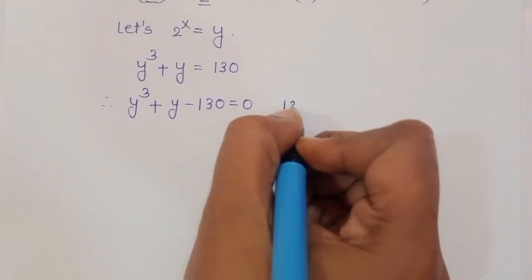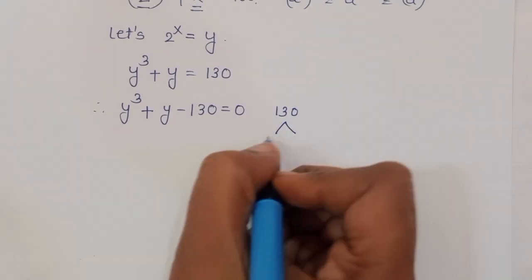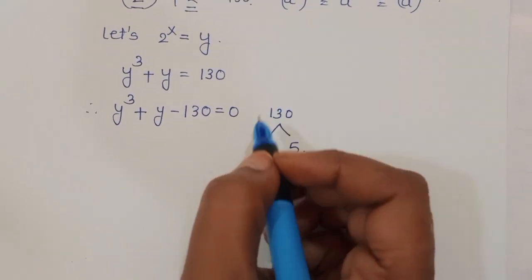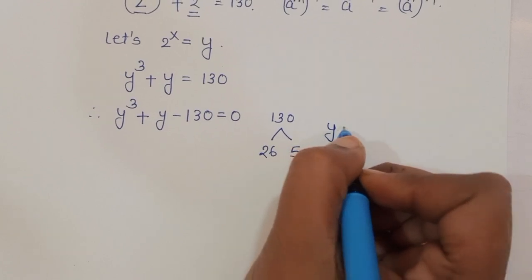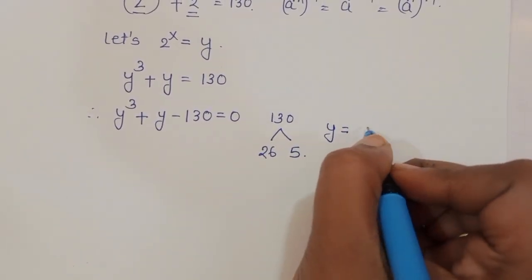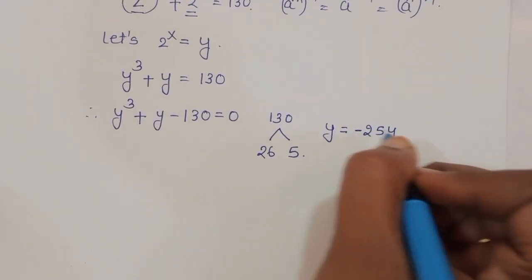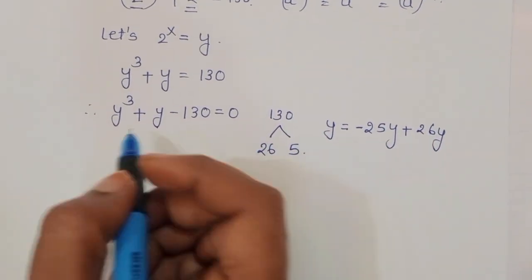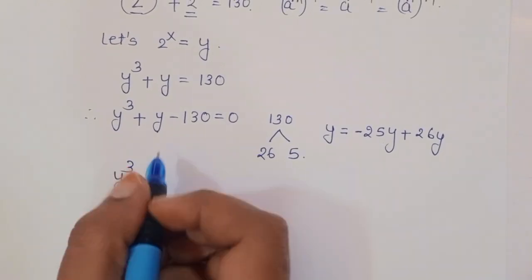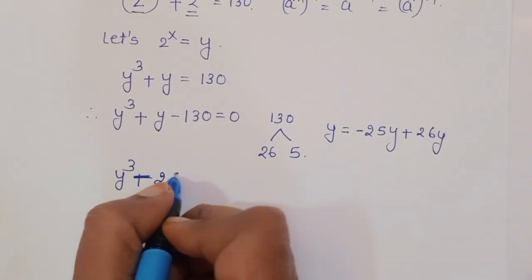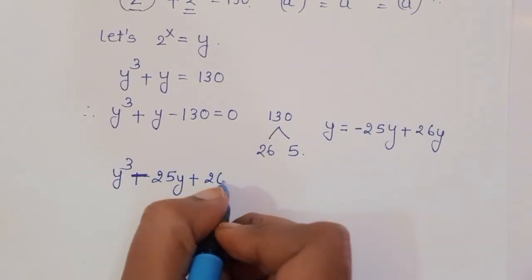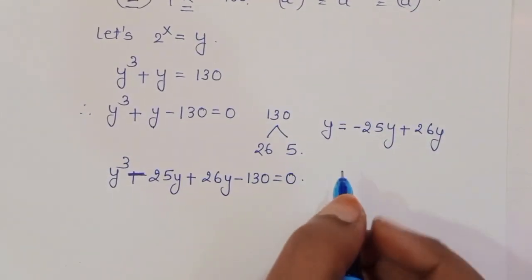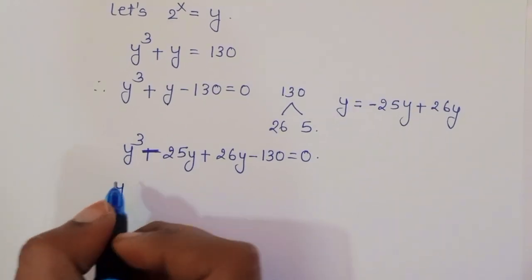Now, consider the factors of 130. We can split the middle term: y is written as minus 25y plus 26y. So y cube minus 25y plus 26y minus 130 is equal to 0. Now, taking y common here.